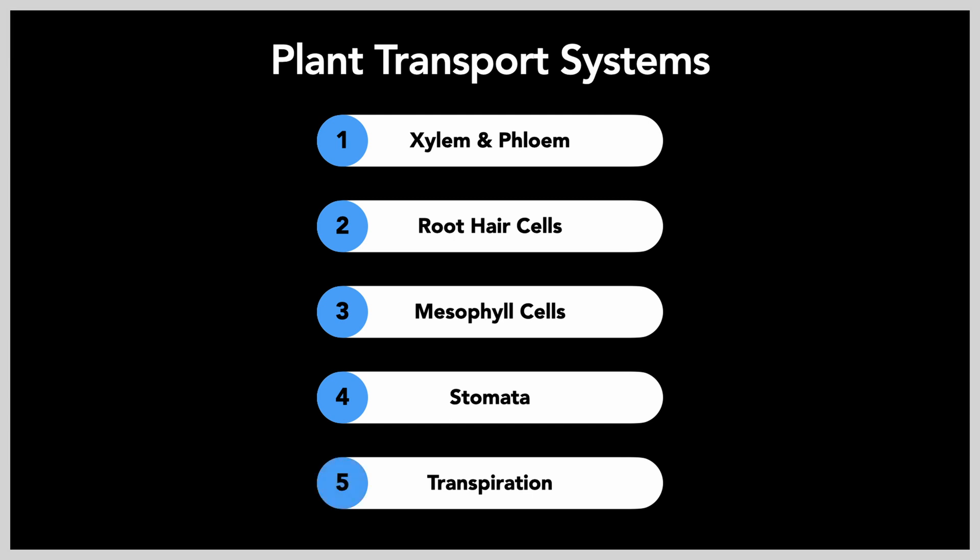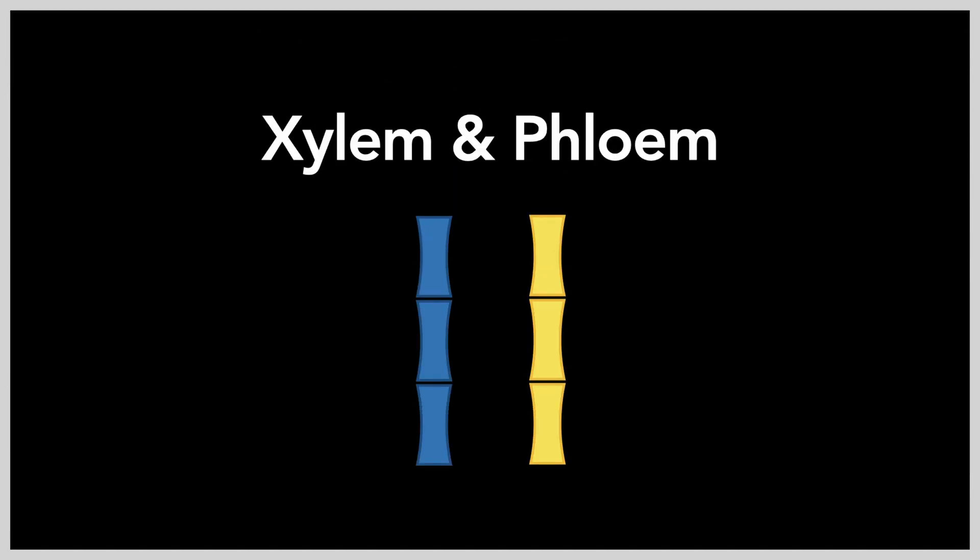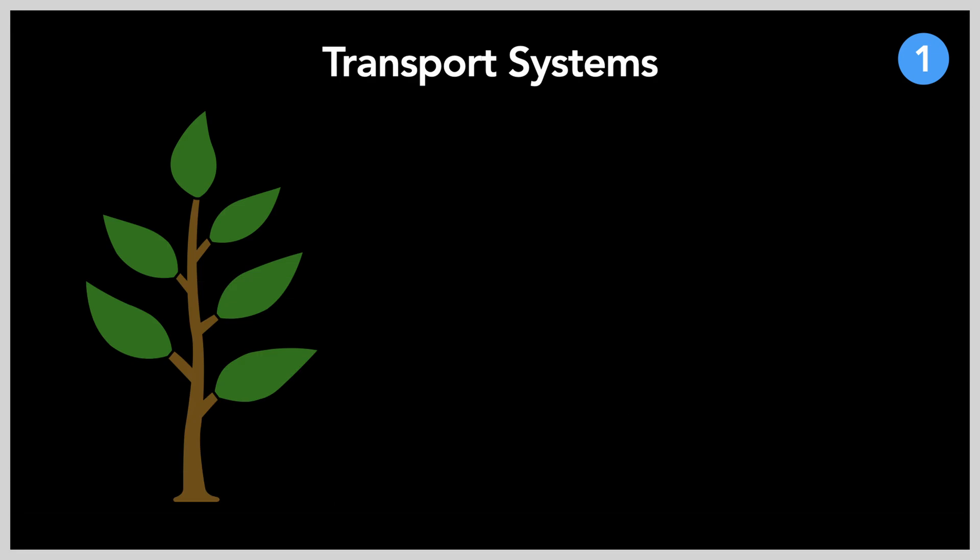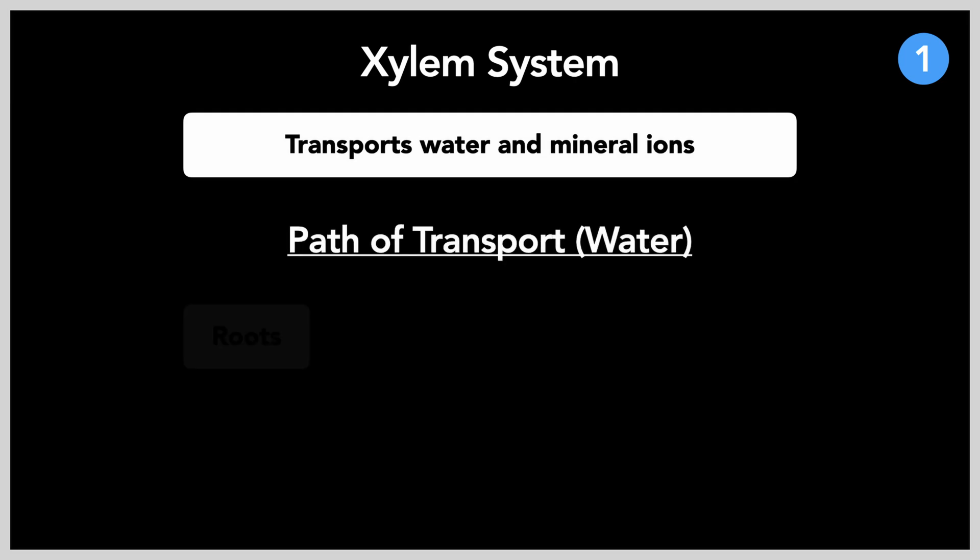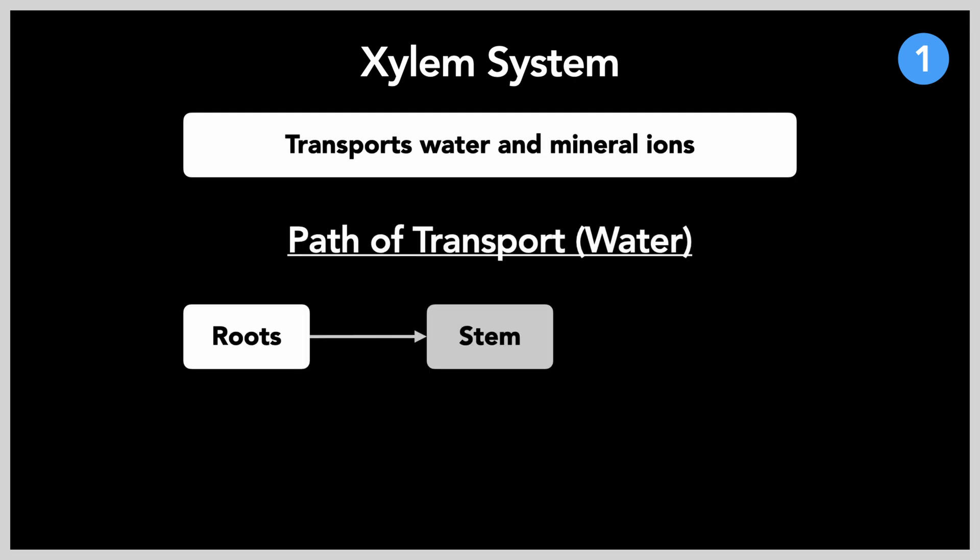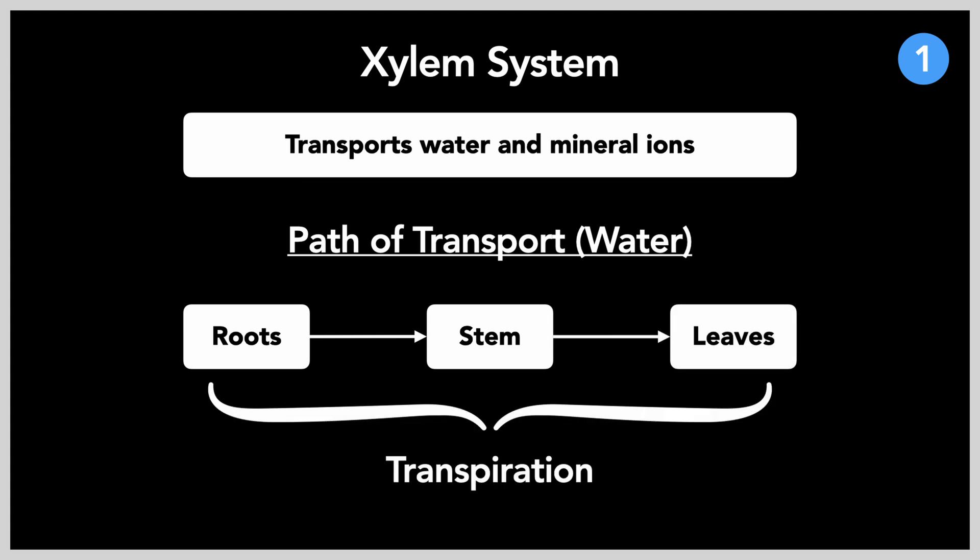Now let's move on to the two plant transport systems. All plants develop two primary transport systems, the xylem and the phloem. The xylem transports water and mineral ions derived from a plant's root hair cells up the stem and into the leaves. This process is called transpiration.